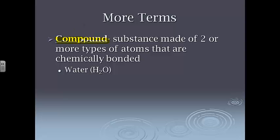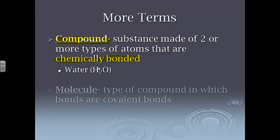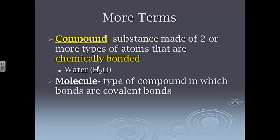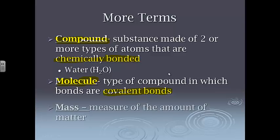A couple more terms. We've got compound. A compound is a substance made of two or more types of atoms that are chemically bonded. So for example, water is H2O. You have a central oxygen. It has two hydrogen atoms bonded to each other. We're going to talk about different types of bonds. But anything with two or more types of atoms bonded together is going to be a compound. And we split that up a little bit. A molecule is a specific type of compound. And a molecule is a type of compound that has covalent bonds. That's something that we will talk a lot about this year as well, is covalent bonding and what that looks like.